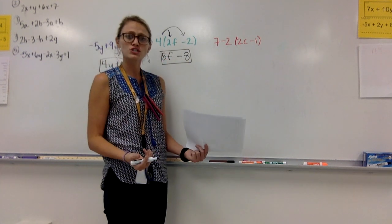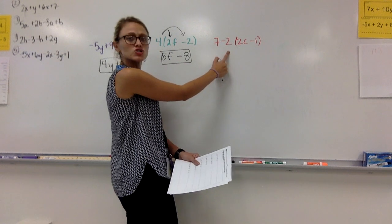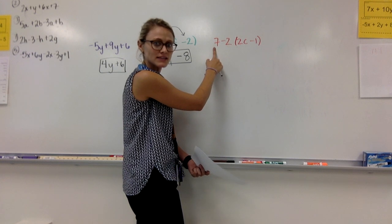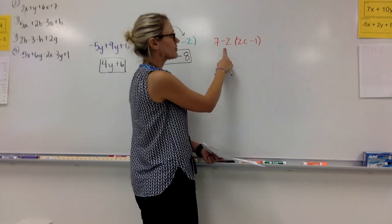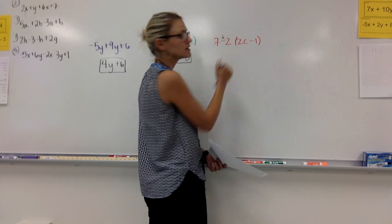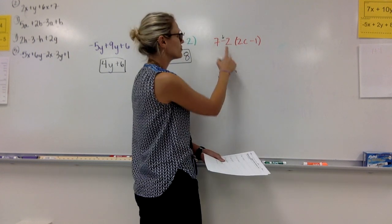We should also have mastered a distribution problem where you have to combine a like term at the end. So here's an example. The -2, remember you take that sign in front every time. So in this case,